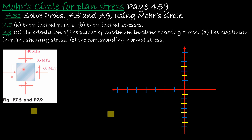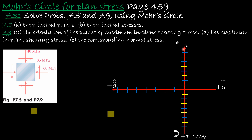The first step is to take this stress element and its given values and input them into our Mohr's Circle coordinate system. On the right we have positive normal stress, which means tension. On the left we have negative normal stress, which represents compression. Below the horizontal axis we have positive shear, meaning the shear stress causes the element to rotate counterclockwise. On the top we have negative shear, which causes the stress element to rotate clockwise.